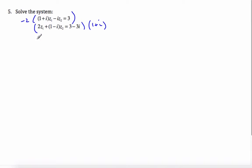When that happens, I'll be able to cancel out the z1. So I get negative 2 times 1 plus i times z1 plus 2i times z2 equal to negative 6.